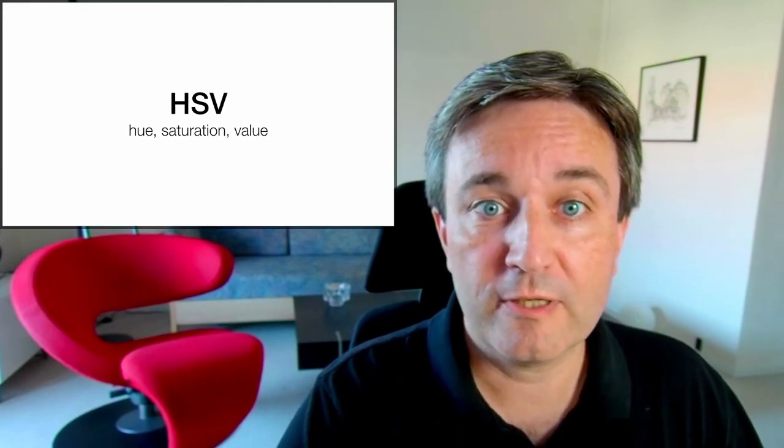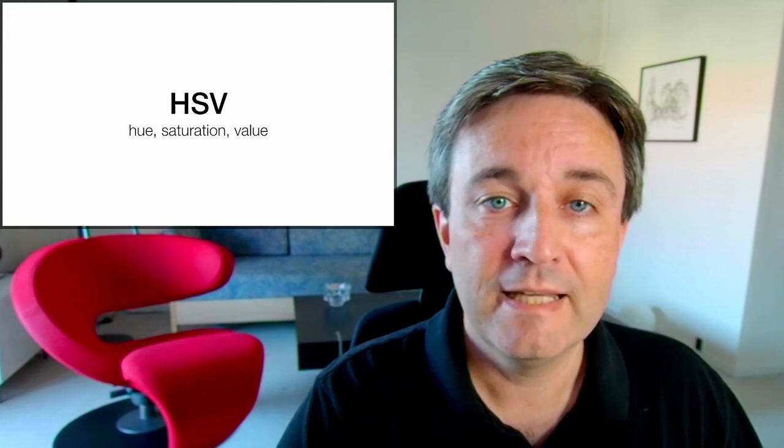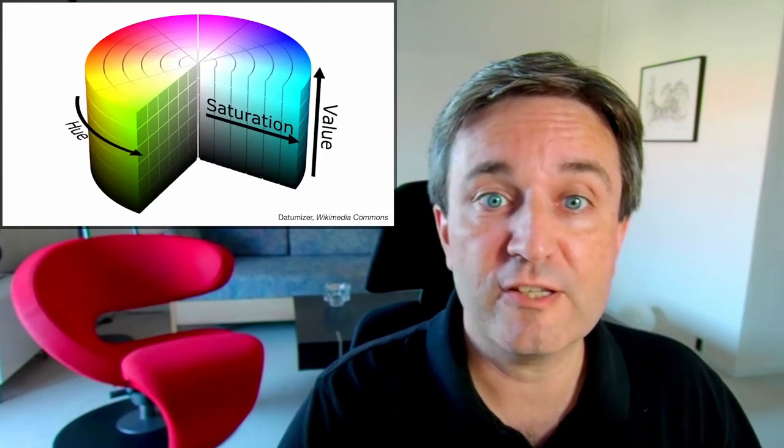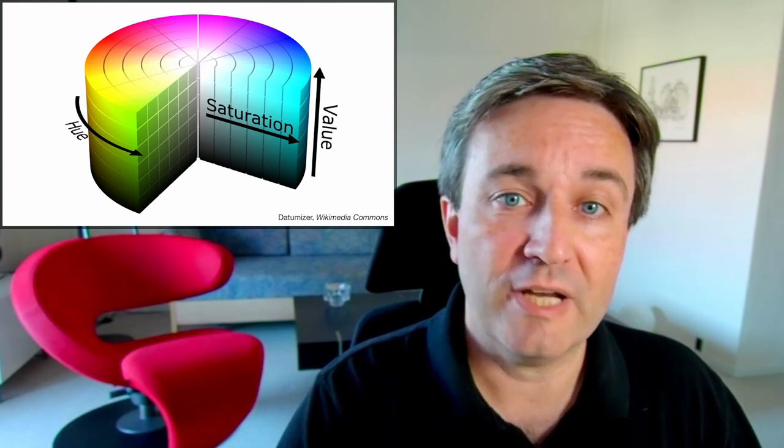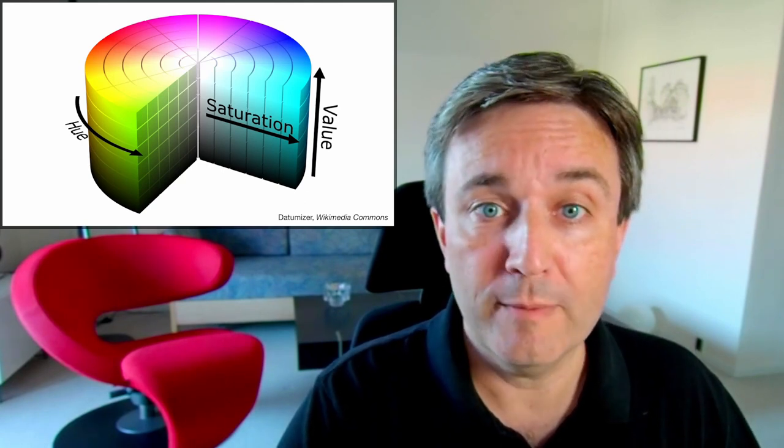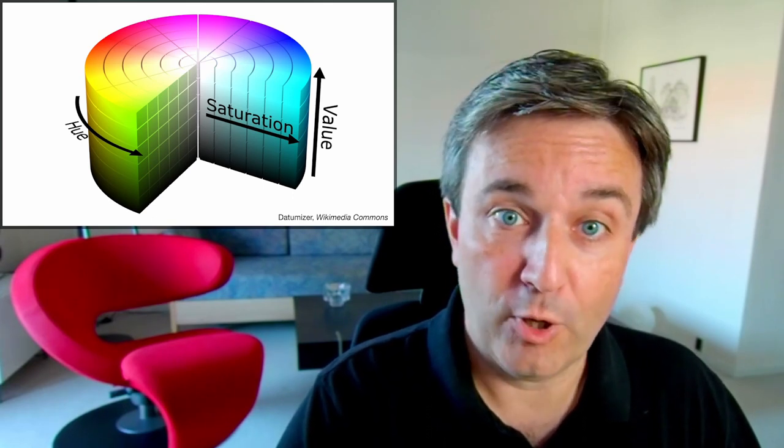For this reason, it's popular to use HSV instead: hue, saturation, value. Here, the colors have been organized into a cylinder instead with the different hues going around the circle, the saturation going from inside to the perimeter, and the value, the brightness, going from bottom to top.